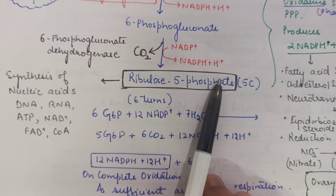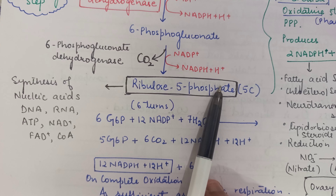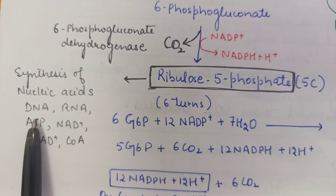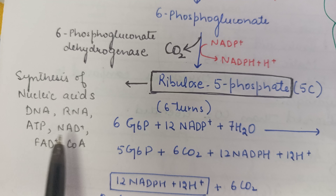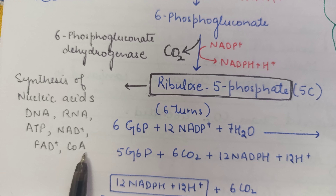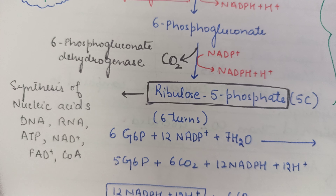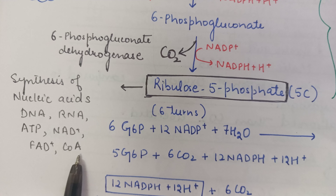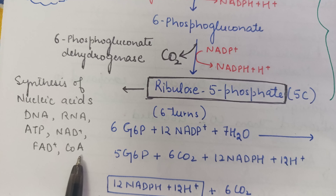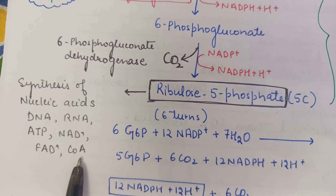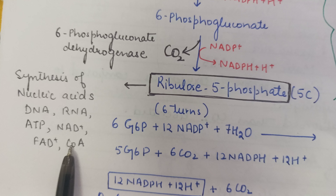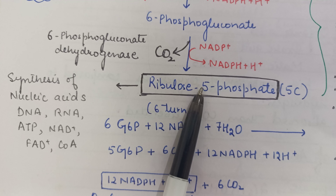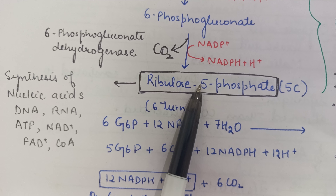The ribulose-5-phosphate produced in the oxidative step also helps in the synthesis of DNA, RNA, ATP, NAD+, FAD, and coenzyme A — all of which are nucleic acids or coenzymes. So ribulose-5-phosphate is very important for the synthesis of nucleic acids and coenzymes, and hence acts as a biosynthetic intermediate.